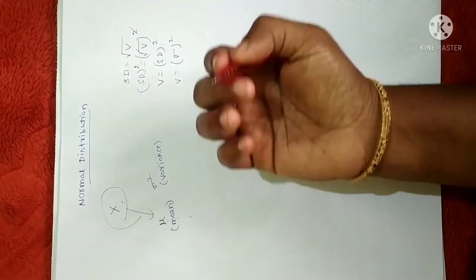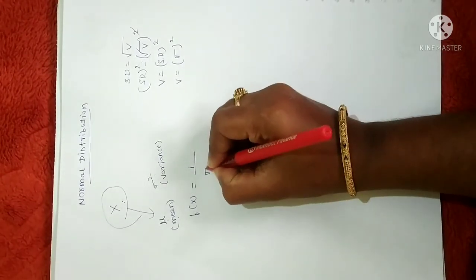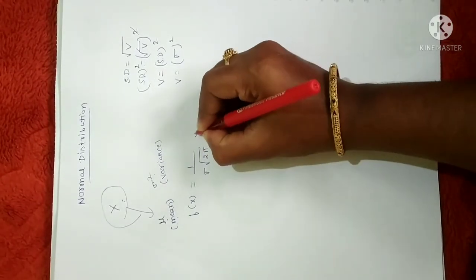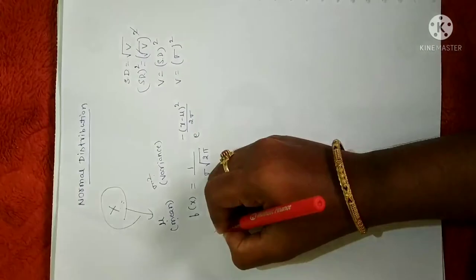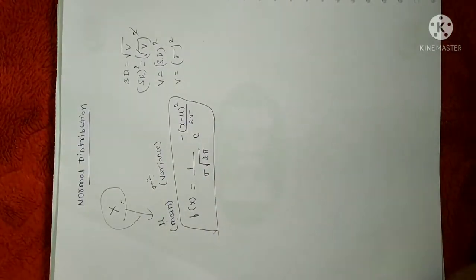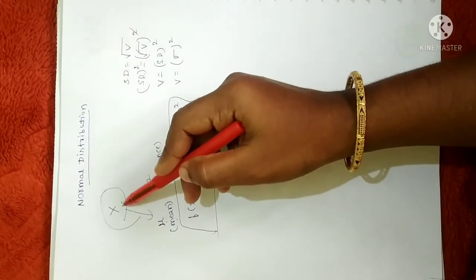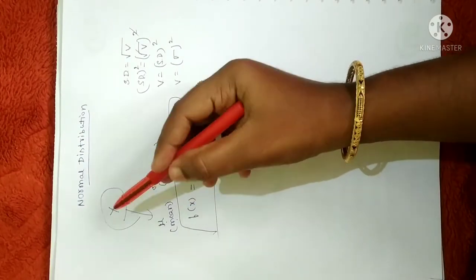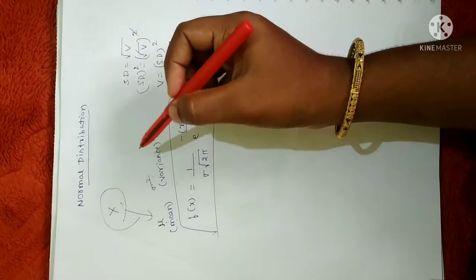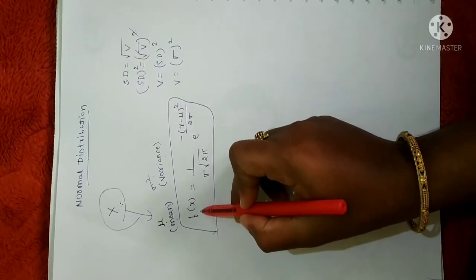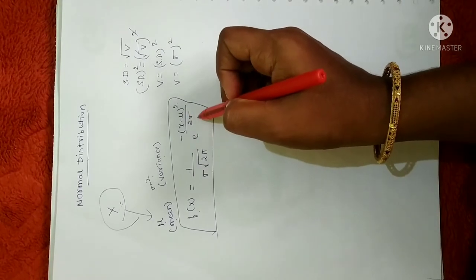The density function is none other than a continuous random distribution. So if its density function is of the form: f of x equals 1 divided by sigma into square root of 2 pi, times e to the power of minus x minus mu whole square divided by 2 sigma squared. The entire numerical analysis and statistical method is based on this formula, so you need to remember it.